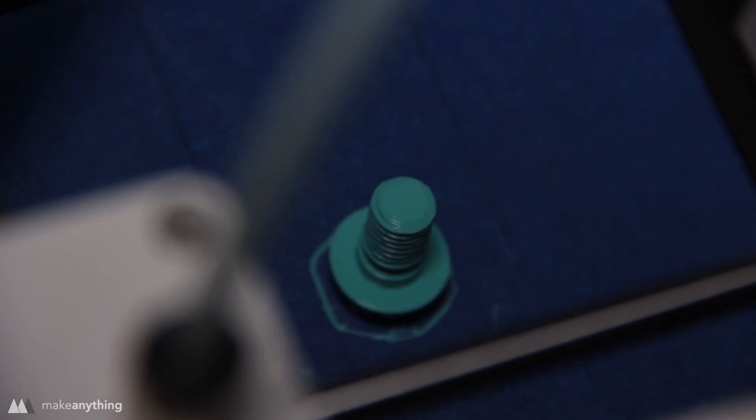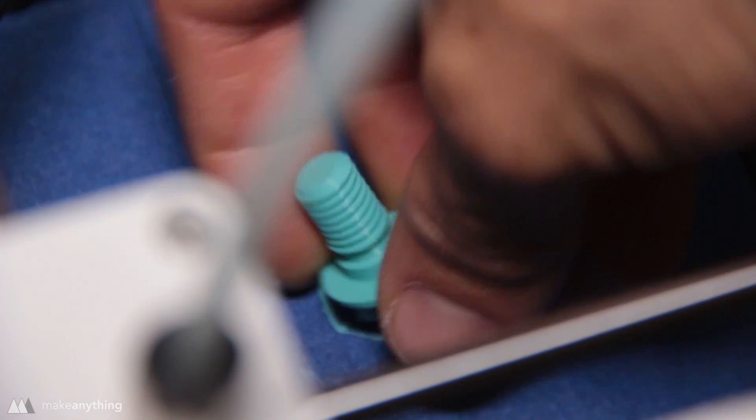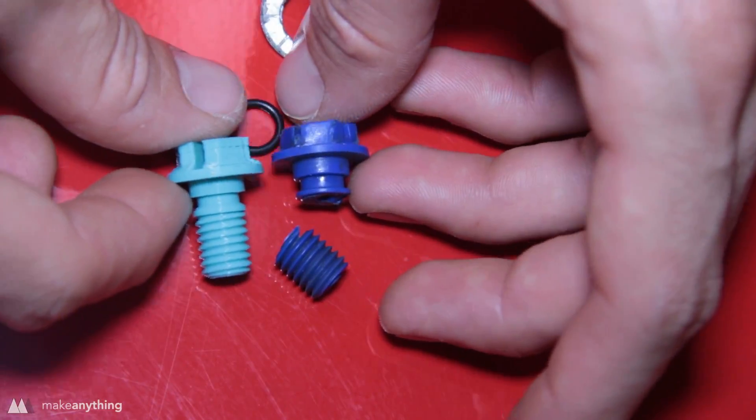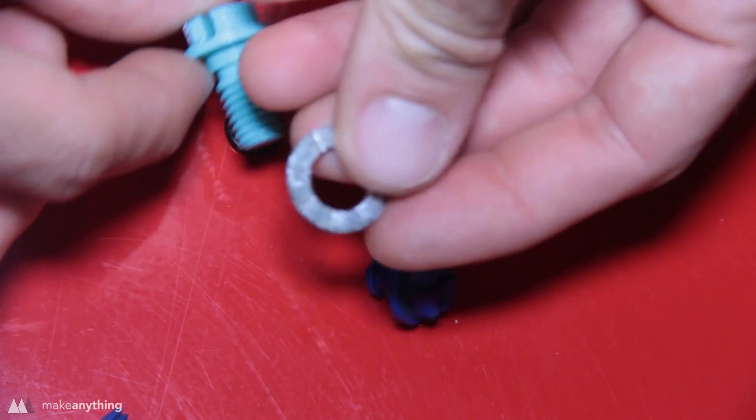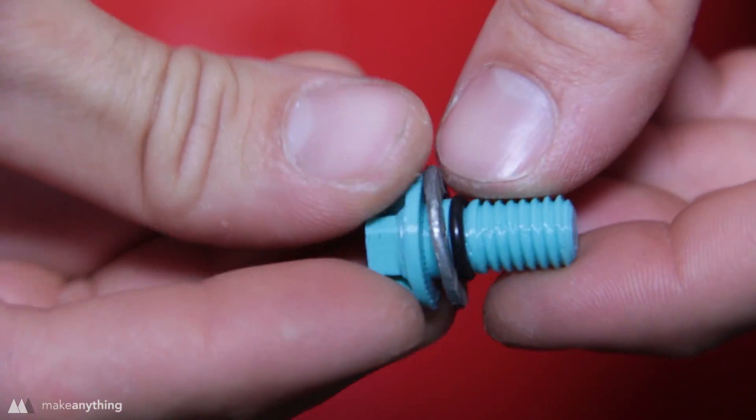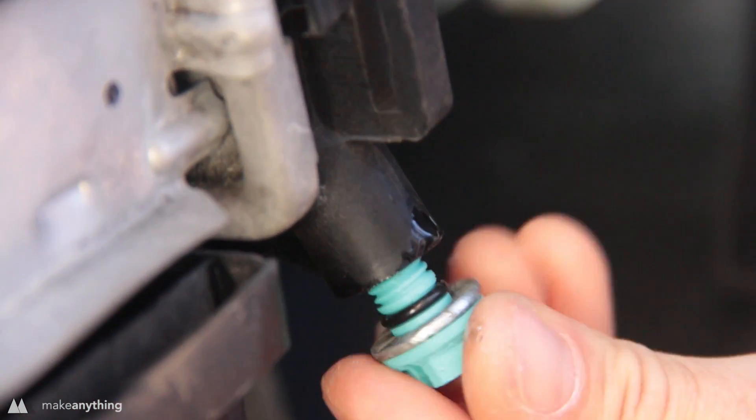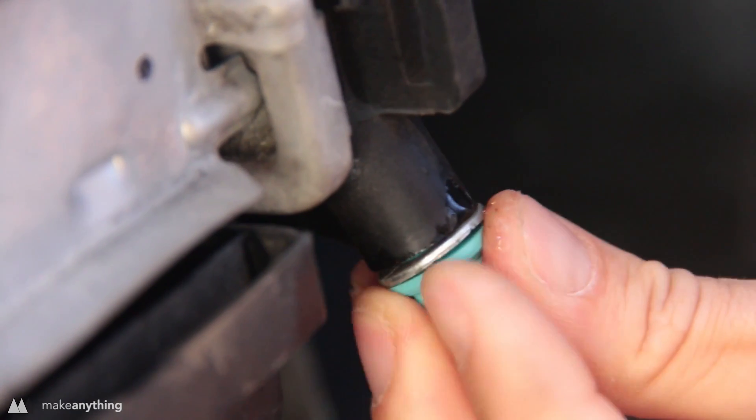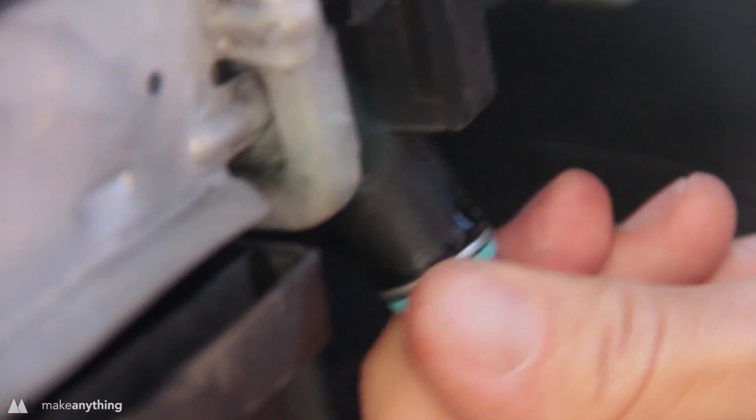After that I wanted to try out a functional print so I printed out this screw which is actually the radiator plug for my BMW. This is a part that broke on my car and it would have cost me at least twenty dollars on eBay and a lot of waiting but instead I was able to really quickly design and print this thing within a couple hours and it's been working just great.